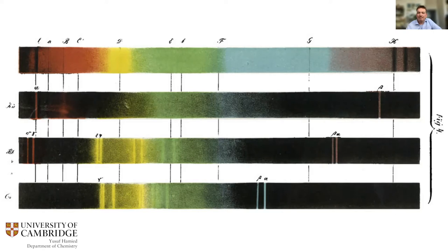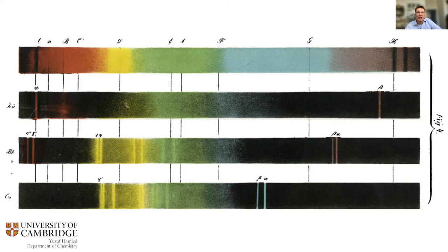Similarly, rubidium was named after treating a mineral lepidolite and observing two lines lying beyond Fraunhofer's line A — in the outermost portion of the red solar rays. They proposed the name rubidium, symbol Rb, from the Latin rubidus, which expressed the darkest red color. You can see these two lines clearly in the spectrum.